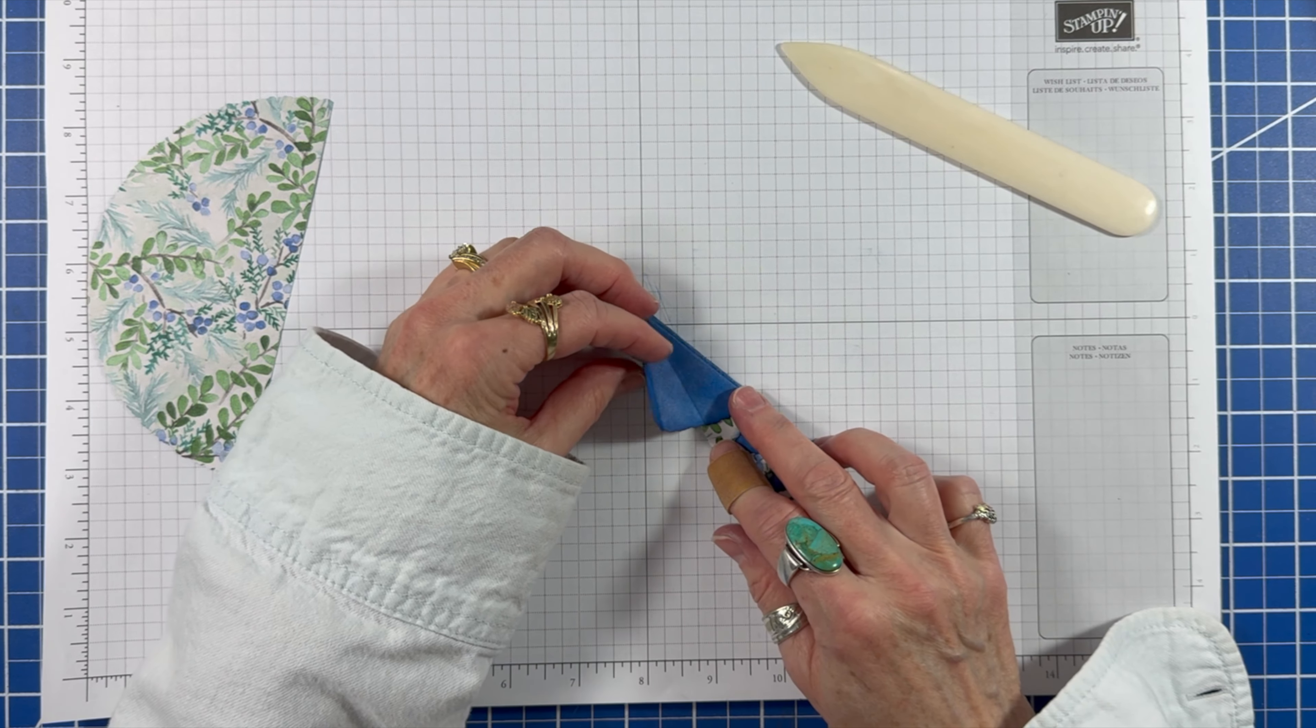Then I pull the top half down and crease. Open and unfold all the creases. And accordion pleat. And now I burnish each fold.